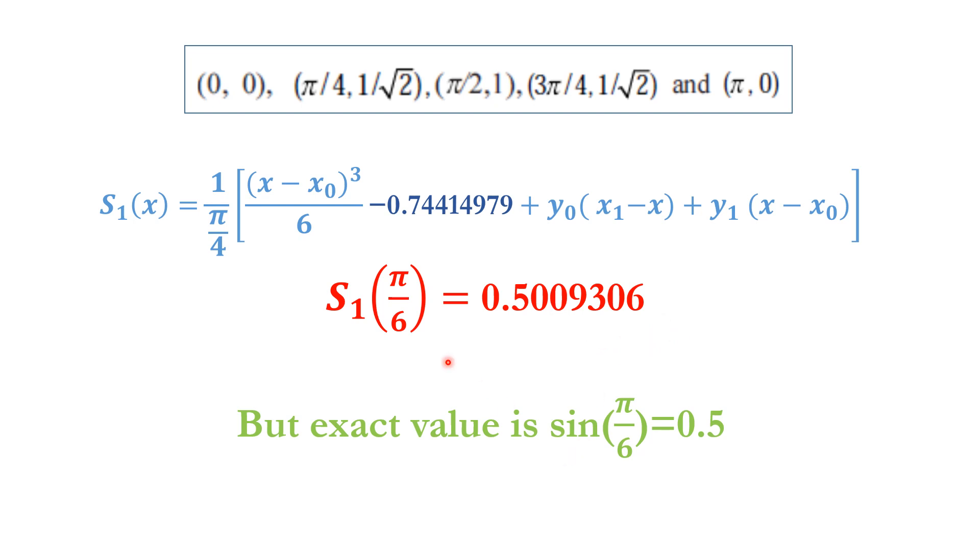This is calculated as 0.5009306. The exact value of the result is 0.5. You can note that these values correspond to the sine function. sin(0) = 0, sin(π/4) = 1/√2, sin(π/2) = 1, sin(3π/4) = 1/√2, and sin(π) = 0. So we can calculate the exact value like sin(π/6), that is sin(30°), which is 0.5. Our result is very near to the exact value.